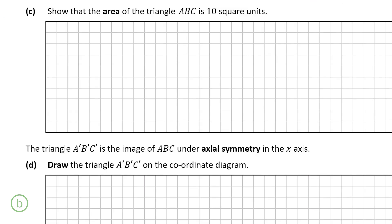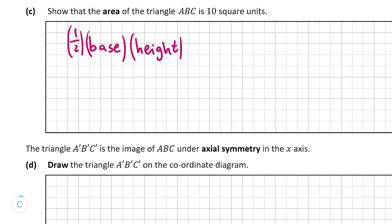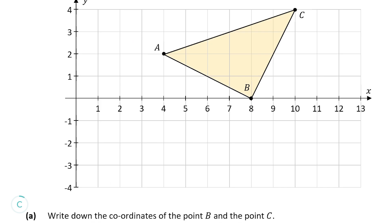Now let's look at part C: we have to show that the area of triangle ABC is 10 square units. The area of a triangle is half the base times the perpendicular height. Looking at our diagram, we'll say line AB is the base and line BC is the height. Remember it must be the perpendicular height — there must be 90 degrees between them — and there is here. You could also swap them around with no effect on the answer.